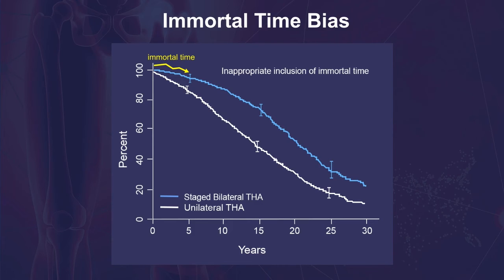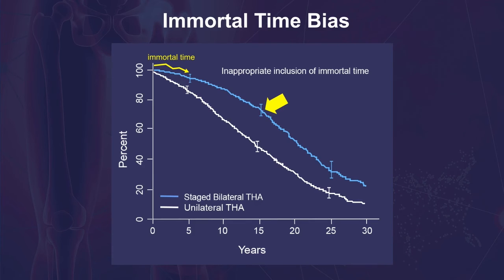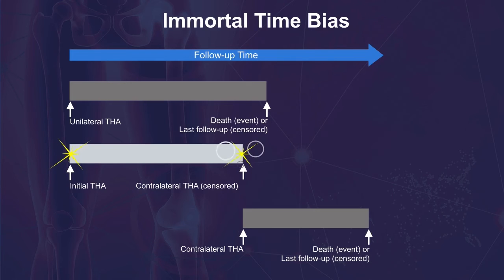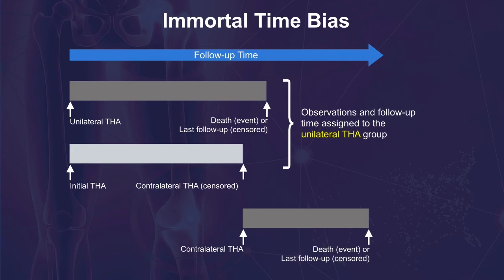In this inappropriate inclusion of immortal time, the bias favors patients in the bilateral surgery group. The 15-year survival rate is 47% among patients who underwent only one surgery, compared to 74% among patients who underwent bilateral surgeries. When this data is analyzed correctly, the follow-up for those with staged bilateral procedures is allocated differently: the time from the initial surgery to the second surgery is included with the unilateral group, whereas the time from the second surgery to death or last follow-up is assigned to the bilateral group.